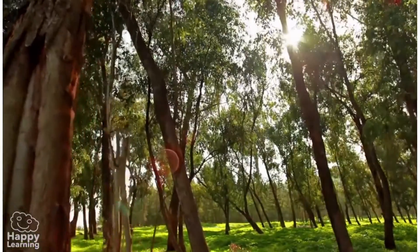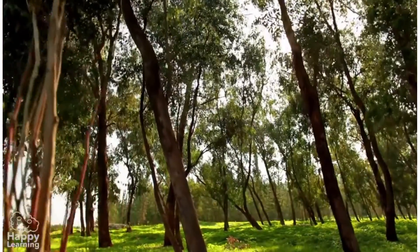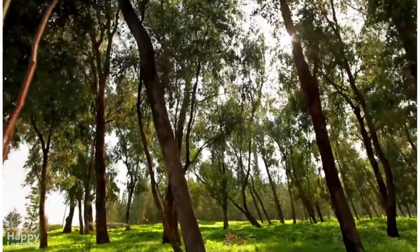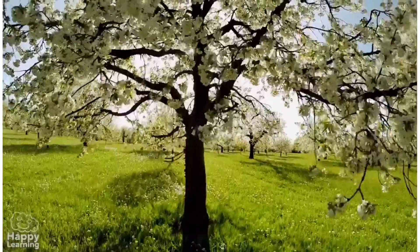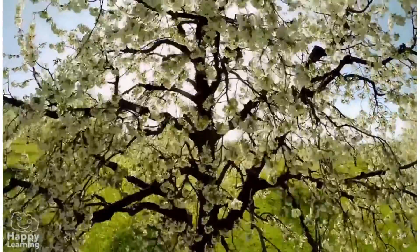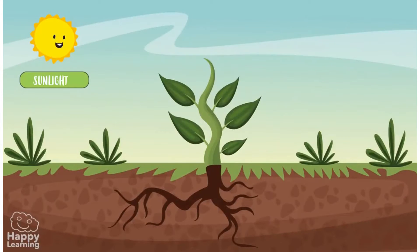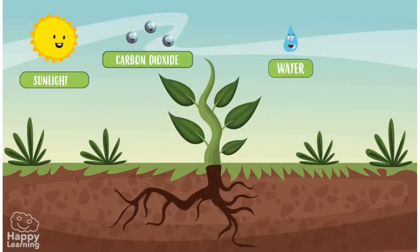Photosynthesis is a process in which plants make their own food to be able to grow and develop. In order to perform photosynthesis, they need various elements: sunlight, carbon dioxide obtained from air, and water.